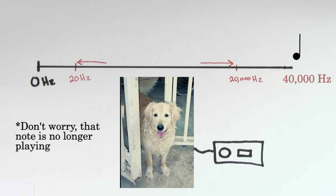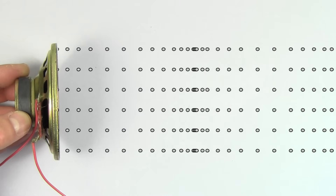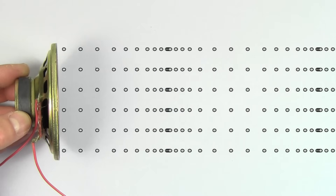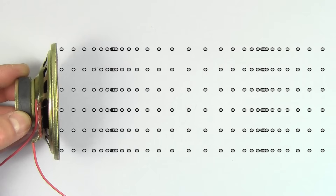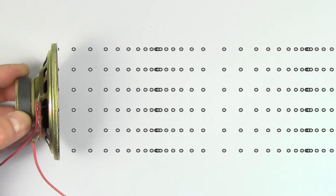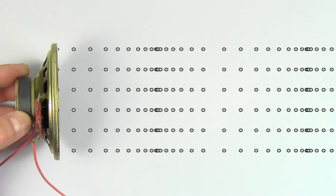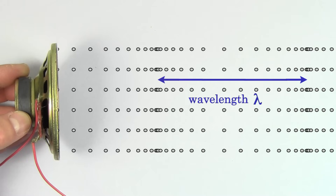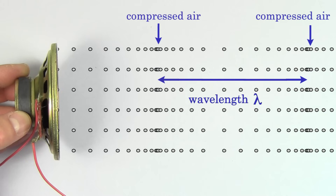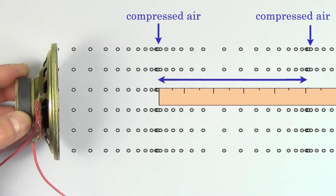Another key idea in sound waves is the wavelength of the sound wave. When this sound is traveling through a region of air, the air molecules will be compressed close together in some regions and spread far apart from each other in other regions. If you find the distance between two compressed regions, that would be the wavelength of that sound wave. Since the wavelength is a distance, we measure it in meters.